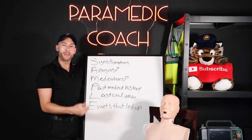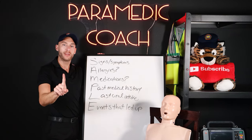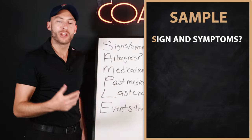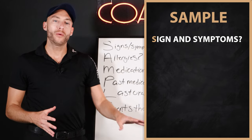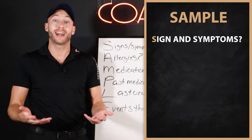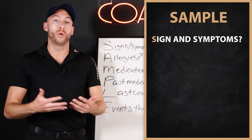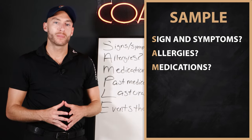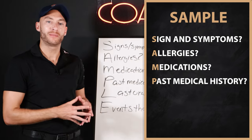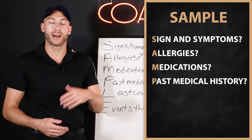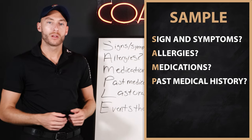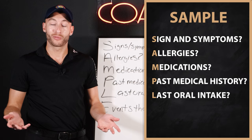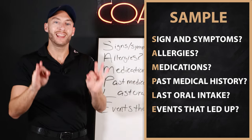There are three mnemonics to help with history taking. The first is SAMPLE. S is for signs and symptoms — what were the signs and symptoms at the onset of calling 911? A is for allergies. M is for medications — what medications does the patient take? P is past medical history, such as diabetes, high blood pressure, high cholesterol, anxiety, or asthma. L is last oral intake — when was the last time the patient ate or took their medications? E is events leading up to the call.